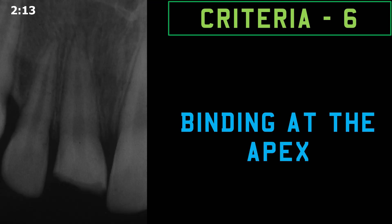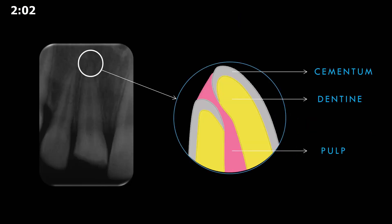The sixth and last criteria I follow is the ability of the file to bind at the apex. To understand this, I have magnified the image at the apex. We can see the cementum, the dentine, and the pulp tissue. The apical foramen does not always exit at the tip of the tooth — it will usually be around one millimeter short of the anatomic and radiographic apex.